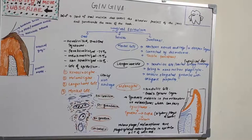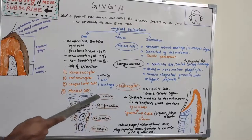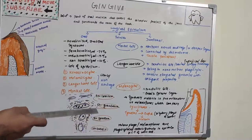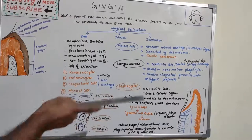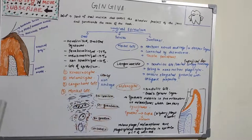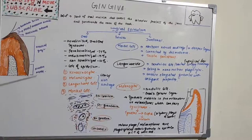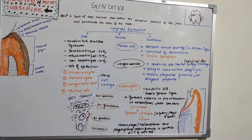Langerhans cells are dendritic cells located among keratinocytes at all suprabasal layers — near the upper layers. They belong to the mononuclear phagocyte system, also known as the reticuloendothelial system. They contain elongated granules and are considered macrophages with possible antigenic properties, so they are involved with immunity as mononuclear phagocytes.